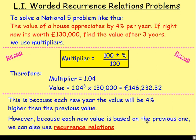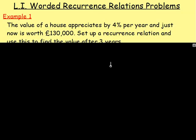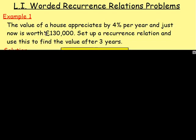The reason we could have used multipliers for that question is because each new year the value will be 4% higher than the previous value. So after three years, you're working out 104% of 104% of 104% of the amount. Because each new value is based on the previous one, we can also use recurrence relations. Let's go to example number one and I'll show you how to do it with a recurrence relation.